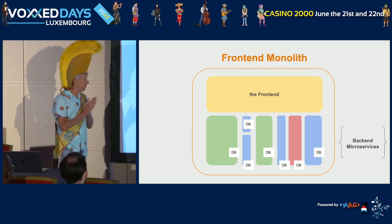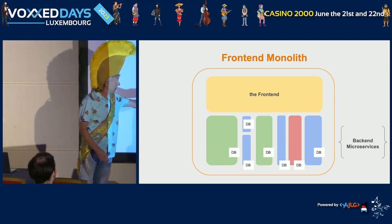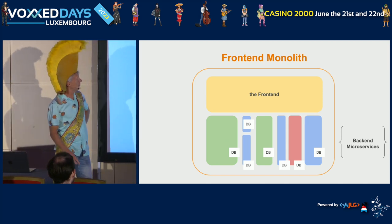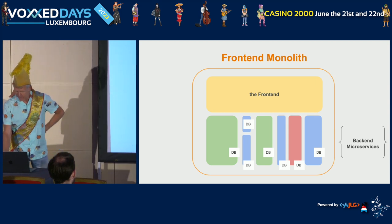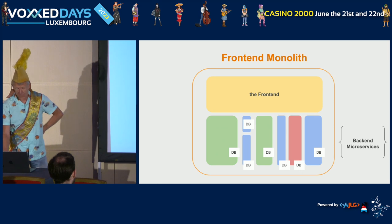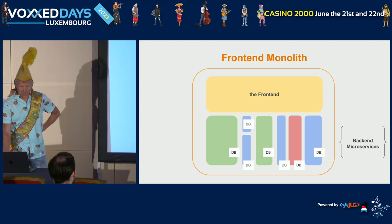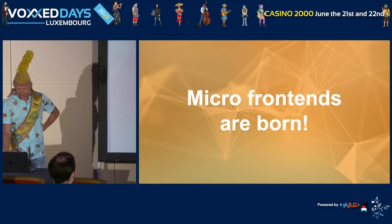So we split up our back-end — you know the story — into microservices, our verticals. But we still have the monolith in the front-end. We still have the frontend monolith, the rhino, in the front-end. So we want to split it up like our back-end, in slices. And so micro frontends are born.